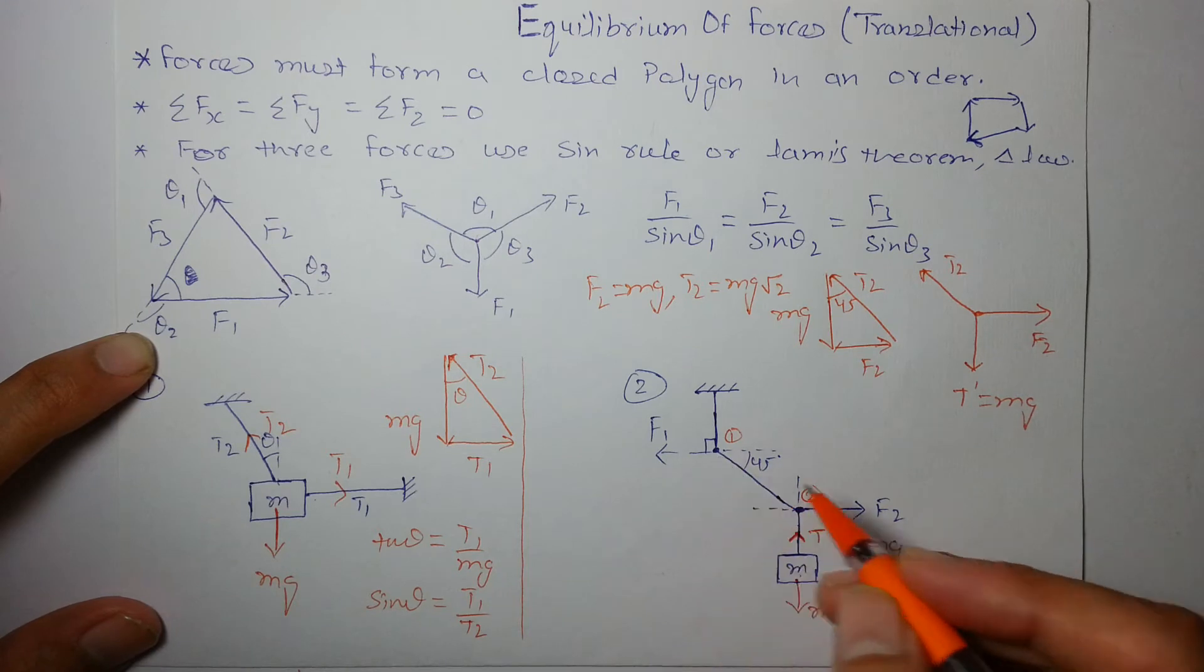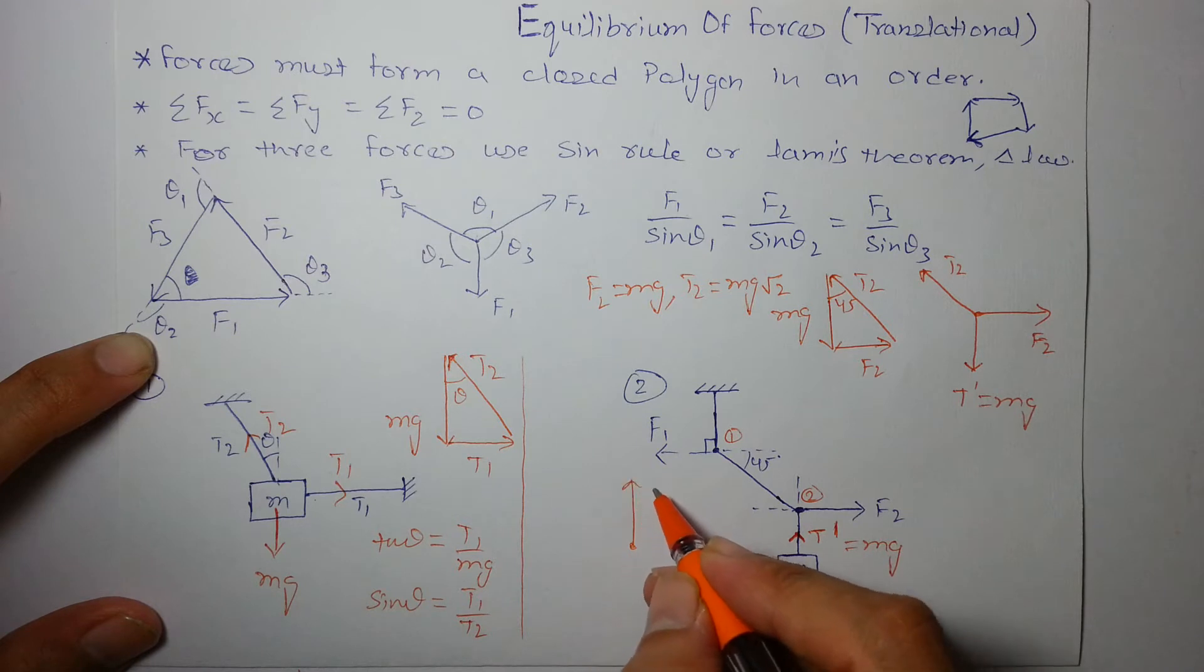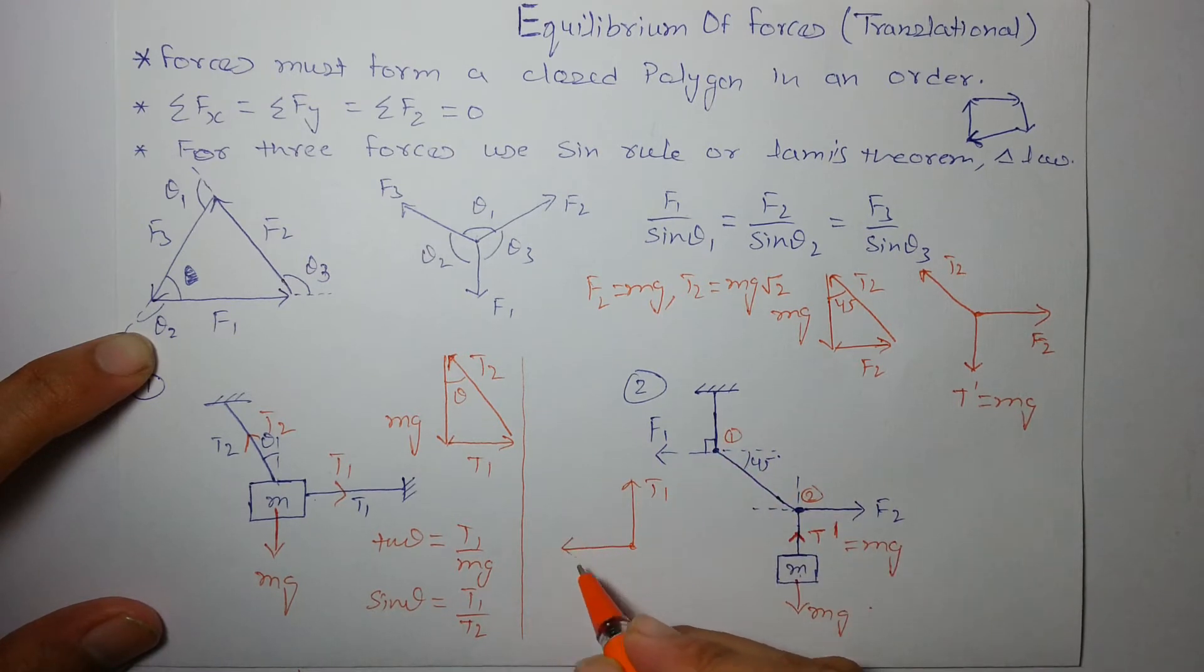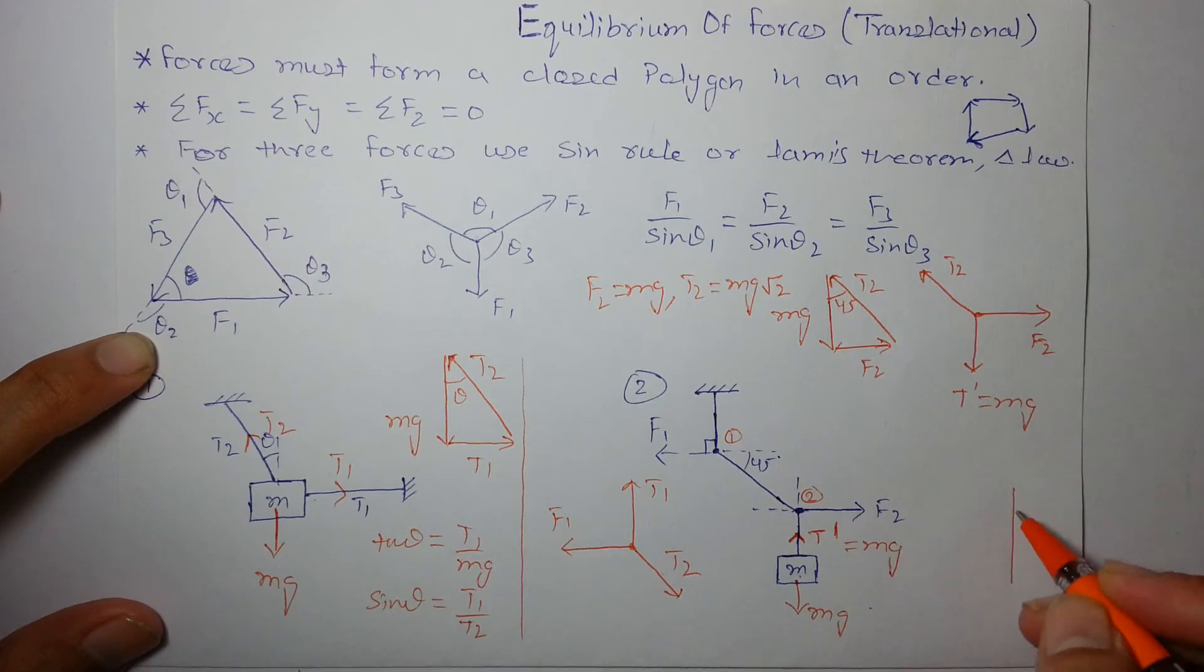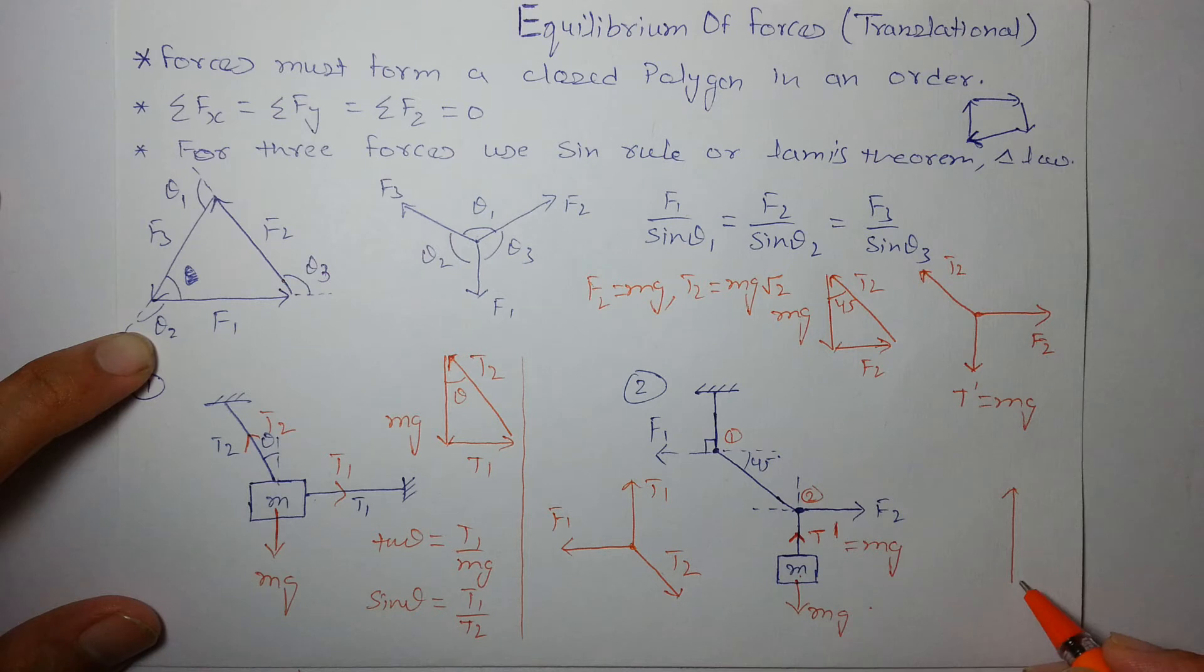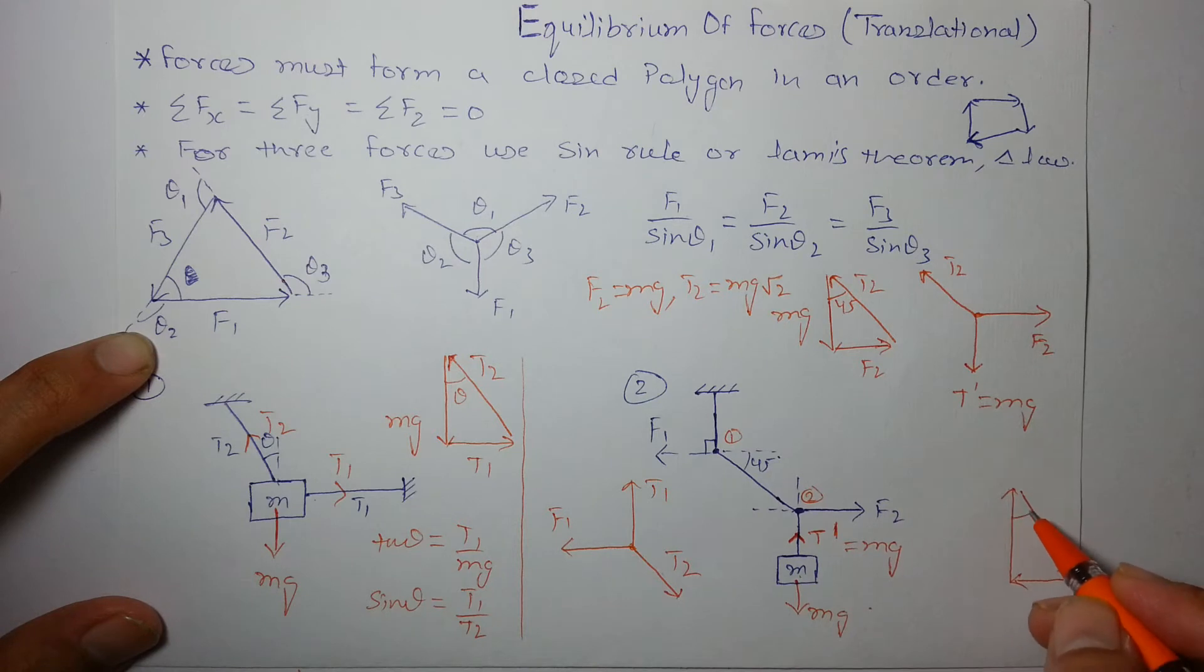So, t2 comes out to be, now draw the FBD of point 1. Point 1 experiences three forces. Let's say the upward force is t1. This is f1 and this is t2. Again, we can form a closed triangle like this. Try to draw it. This is an upward force and this and this. These are the three forces. Again, angle is 45. This is t1. This is f1 and this is t2.